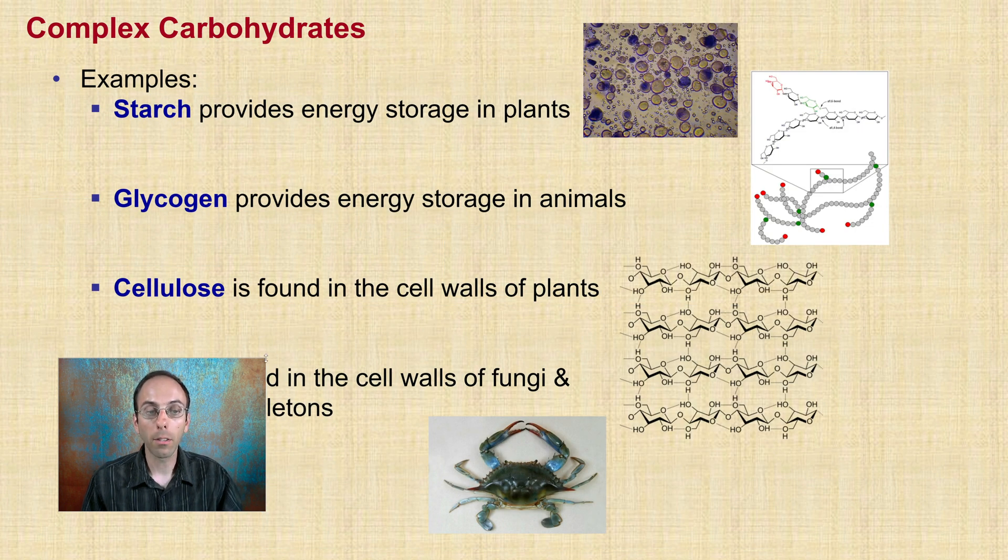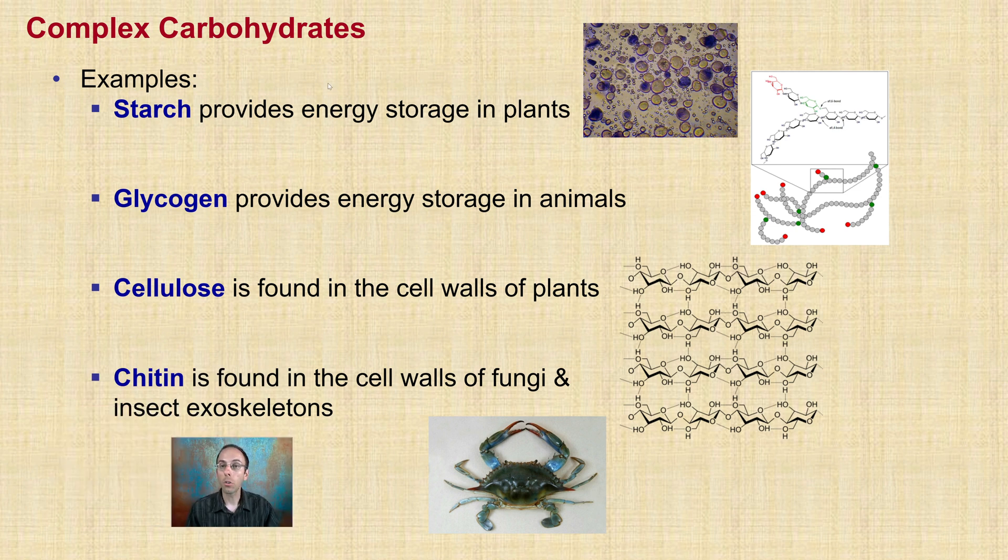Now when we're looking at these complex carbohydrates, they fall into many categories. So for example, we have starch being an example. Now starch provides energy storage in plants. So it's an important energy storage molecule for the plant world. Glycogen here provides energy storage in animals. So they're both complex carbohydrates, but there's different forms for different organisms. Cellulose is found in the plant walls. That's what gives them their strength and rigidity. Also high amounts of energy that we don't really, as humans, not able to break down all that well versus other animals that have a more complex digestive system are. And chitin is found in cell walls of fungi and in insects and exoskeletons. So here we have a blue crab that has a lot of chitin in it. It's a very dense outer shell. That is a carbohydrate, but again, we're typically going after the meat on the inside because we can lack the ability to break down the great degree of complexity of the chitin that's in the shell.